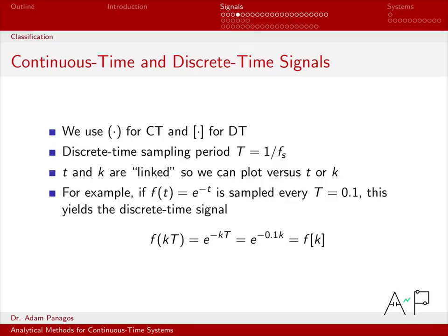So just kind of summarizing - we're always going to use parentheses when dealing with continuous-time signals, so writing down x(t) you know it's a continuous-time signal. And we're always going to use the square brackets for discrete-time signals.